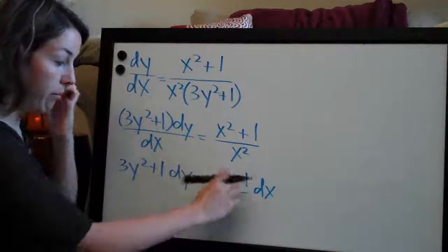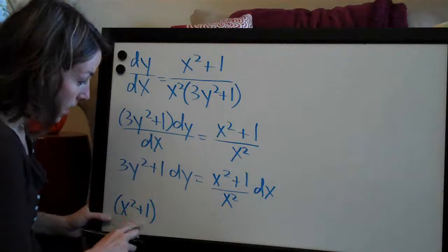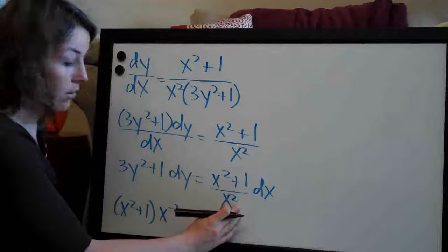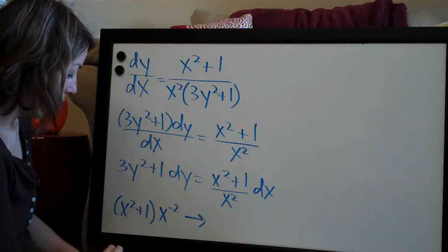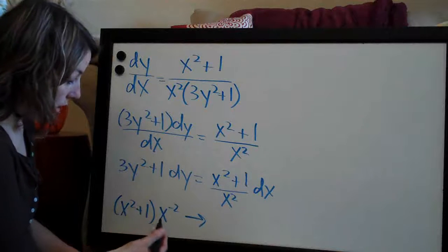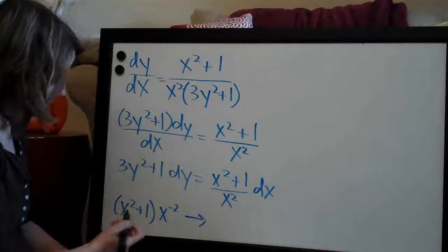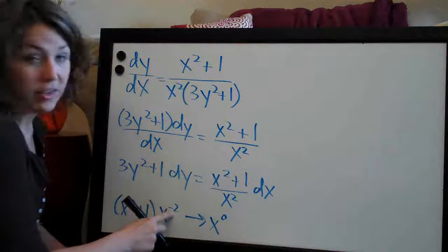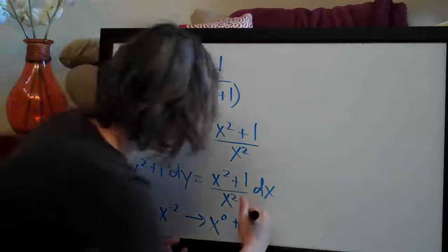I'm going to simplify x squared plus 1 over x squared by moving x squared from the denominator to the numerator, changing the exponent sign from positive to negative — giving us x squared plus 1, times x to the negative 2. Distributing x to the negative 2: x squared times x to the negative 2 equals x to the zero, because 2 plus negative 2 is 0. And 1 times x to the negative 2 is just x to the negative 2.